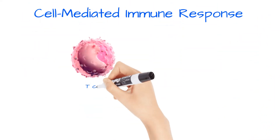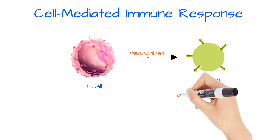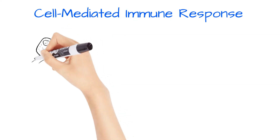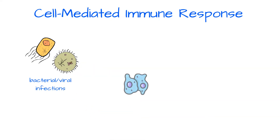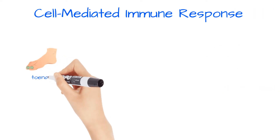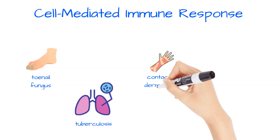A cell-mediated response happens after a T-cell recognizes a specific antigen. It's also called delayed hypersensitivity. The main immune cells involved are the T-cells, macrophages, and NK cells. Like the humoral response, the cellular response protects against bacteria and viruses, but also protects against tumor cells and fungi. Examples of conditions evoking a cell-mediated immune response are toenail fungus, tuberculosis, contact dermatitis, and transplant rejection.